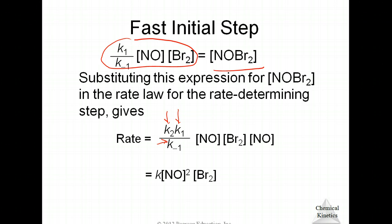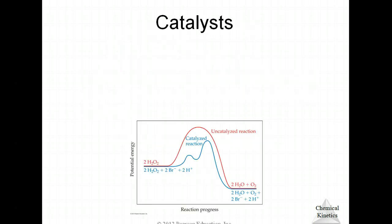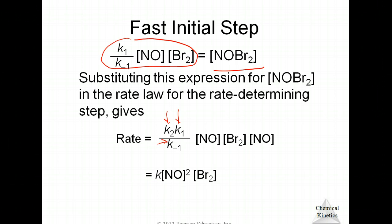If we clean that up a little bit, we have a new rate constant. And the NO and the NO, there's two of them, so that's now second order times the Br2. That is done. Real messy. We'll do an example problem like that. They don't come along that often, but you do need to be aware of it and you probably will see one or two of them.